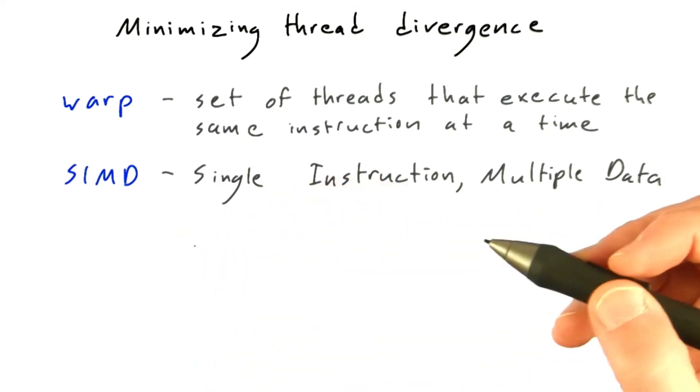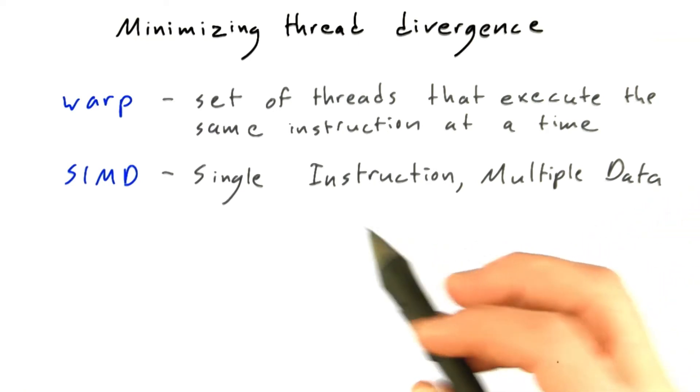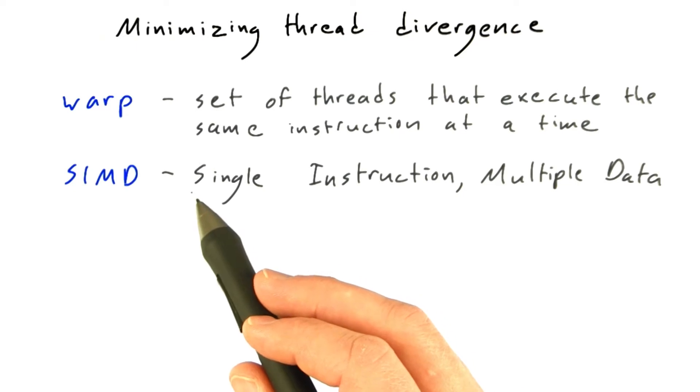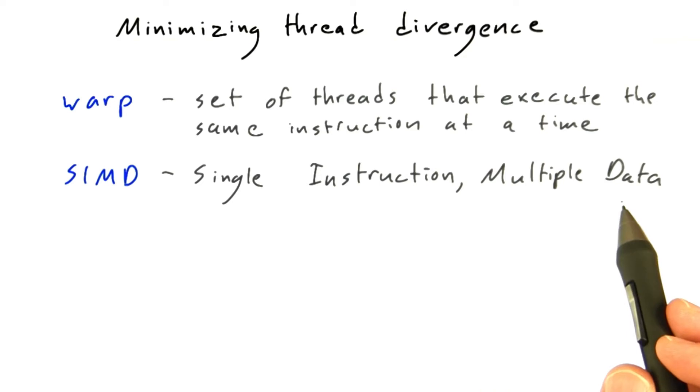Computer architects have been building SIMD processors for decades. It saves a lot of transistors and a lot of power if you can amortize the work used to decode and fetch and perform a single instruction against multiple pieces of data at once.